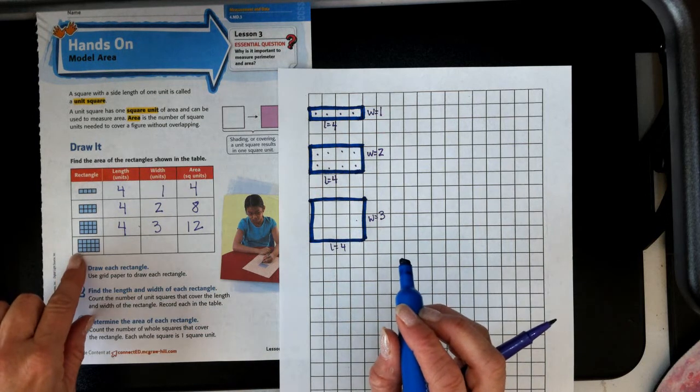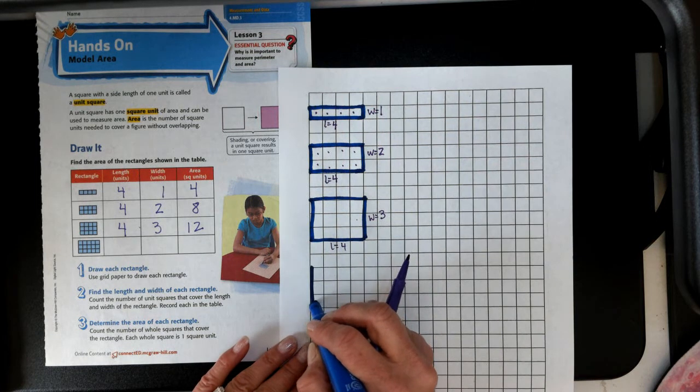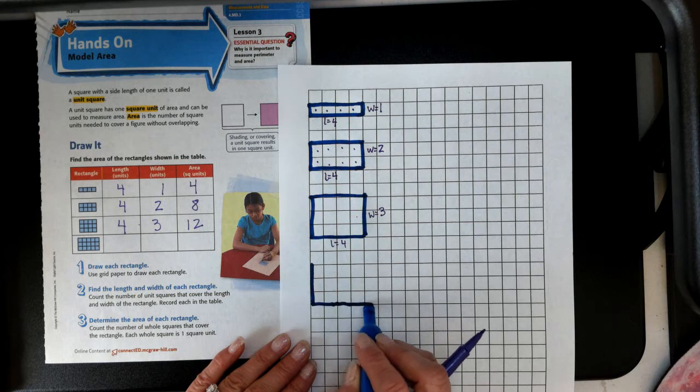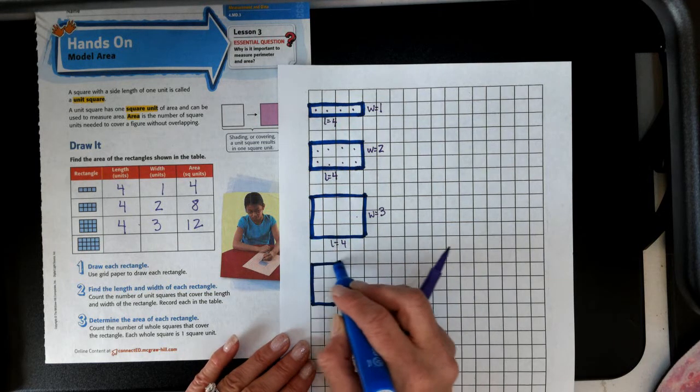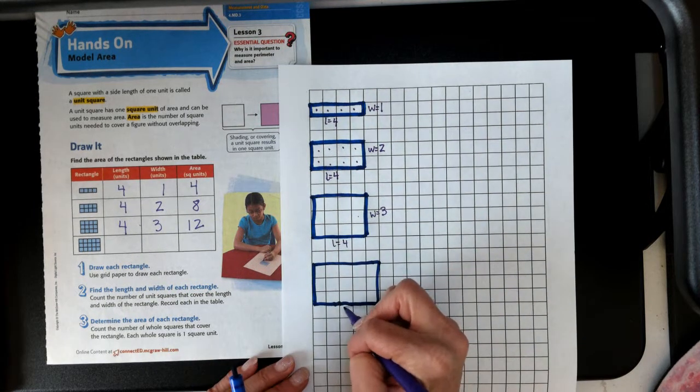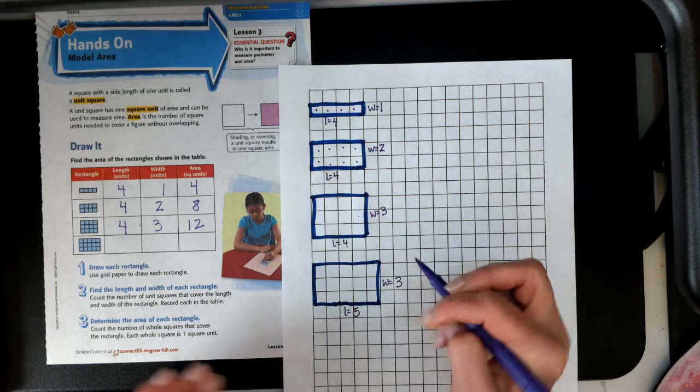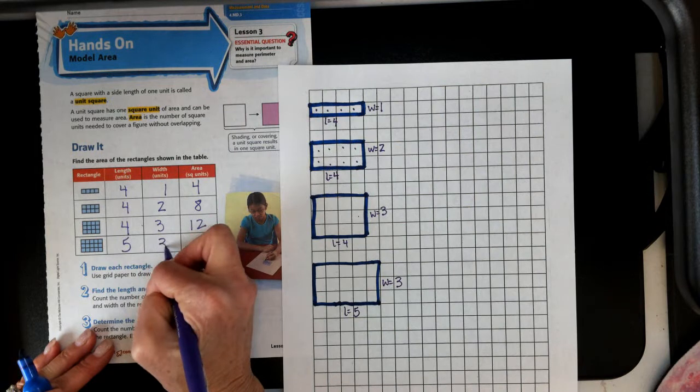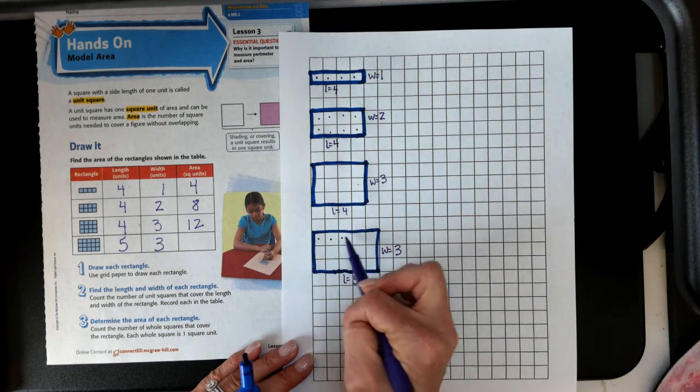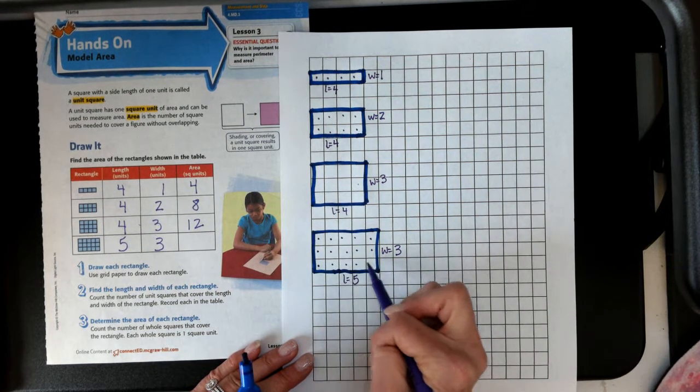Let's keep going. Oh, look, they changed it up on us this time. We're going over five. One, two, three, four, five, and three tall. One, two, three, four, five, six, seven, eight, nine, ten, eleven, twelve, thirteen, fourteen, fifteen.